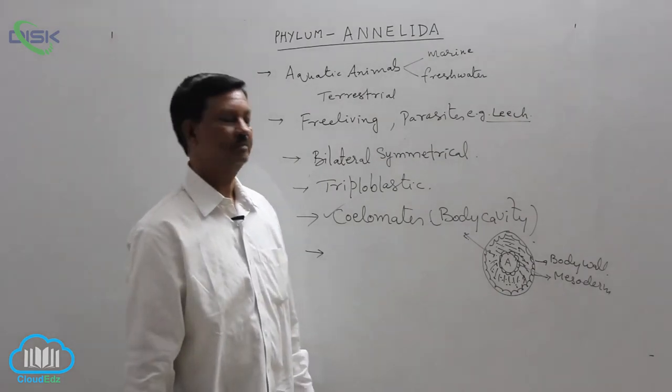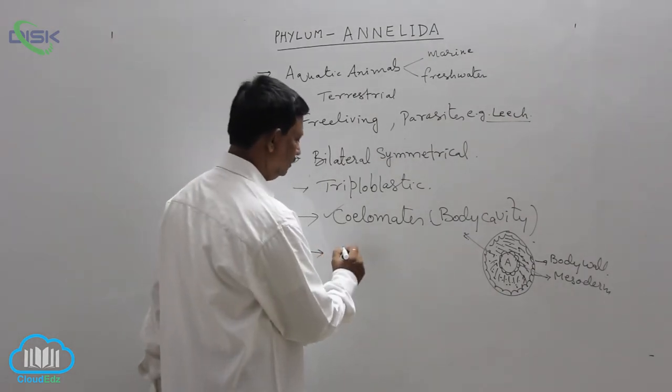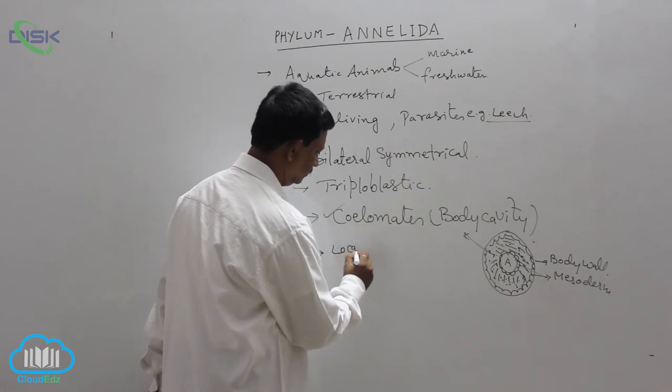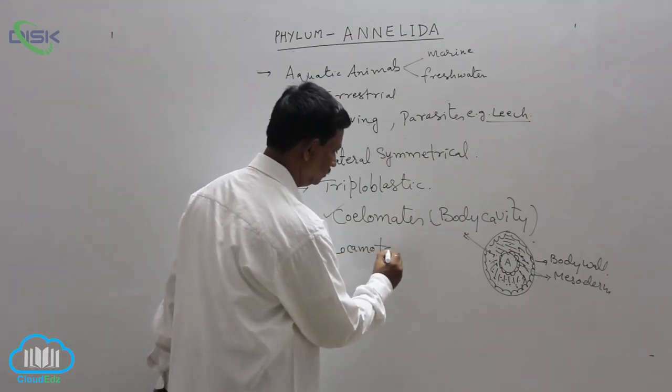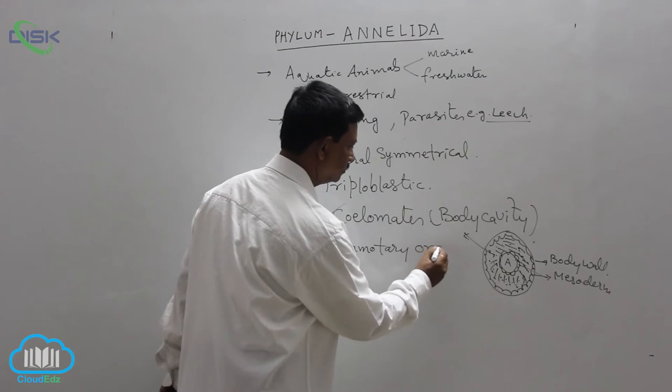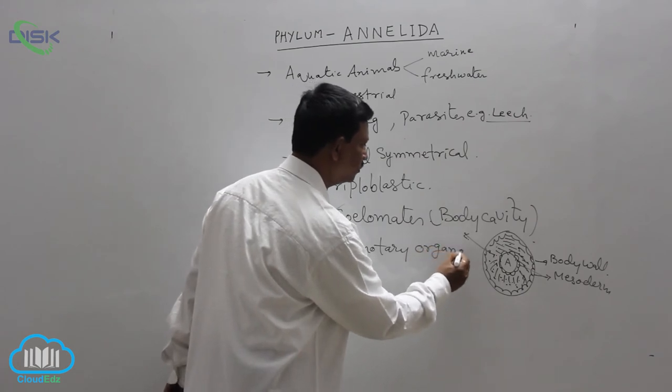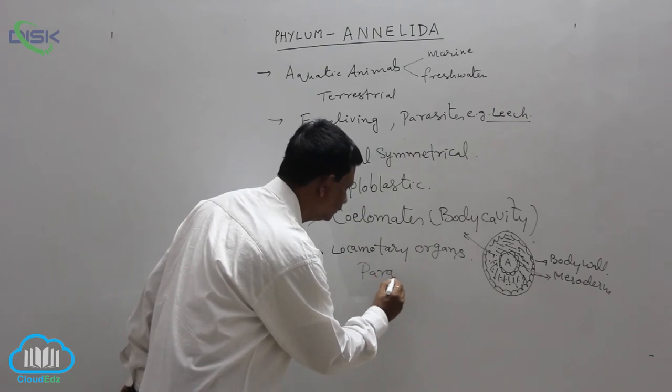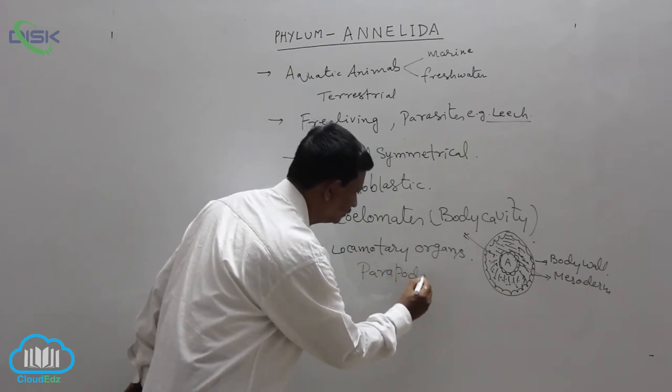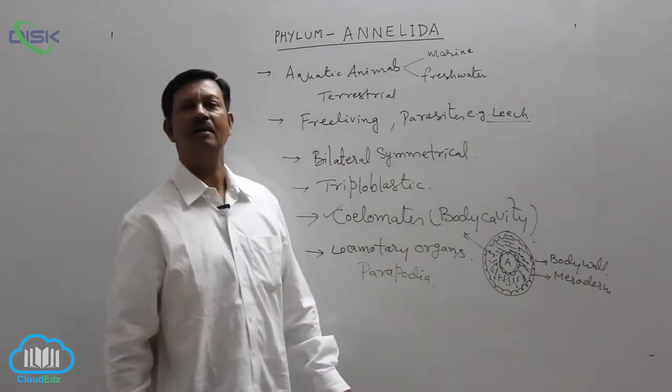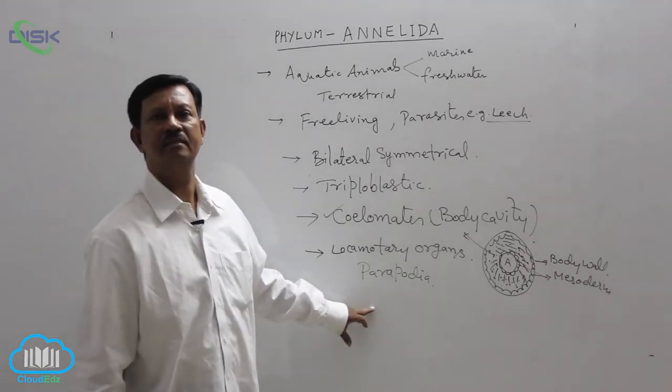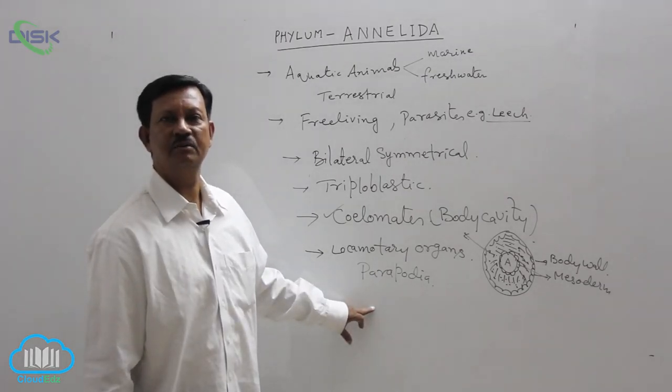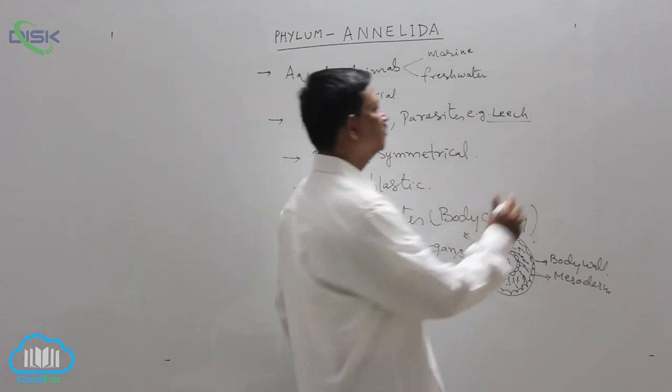Locomotory organs. Different types of locomotory organs are present. They are parapodia. On the lateral sides of some animals, a group of setae are united and forms into parapodia.